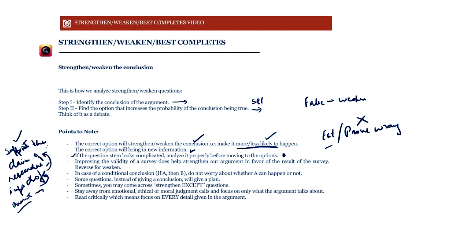Improving the validity of a survey helps strengthen the argument in favor of the survey's result, and the reverse for weakening. Normally we say we cannot touch the premises since they are taken as true, but if the argument gives us a survey and we can show there was sampling bias, the result of the survey becomes questionable. So in survey questions, questioning or establishing the validity of the survey itself can weaken or strengthen the conclusion, even though the conclusion is the survey's result.